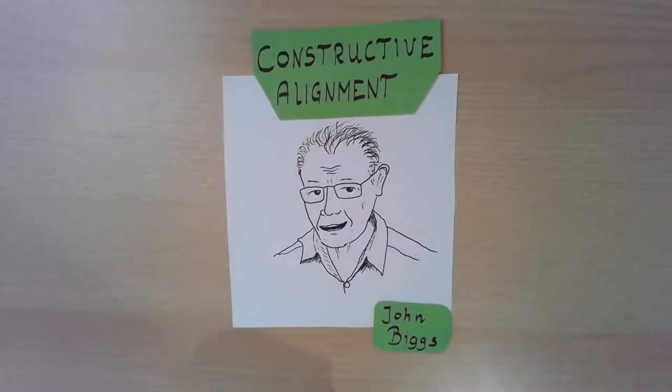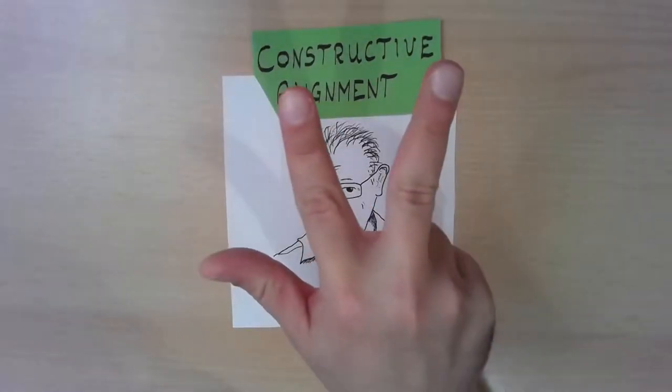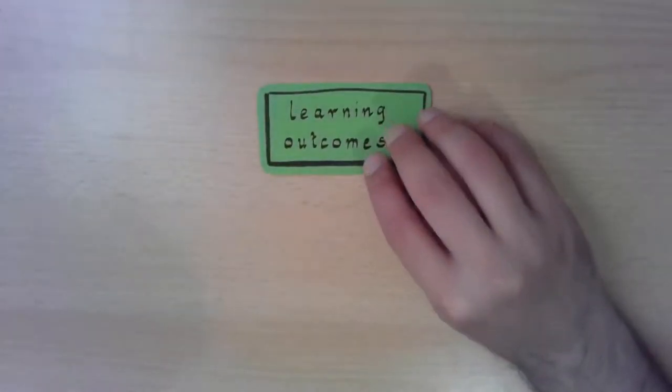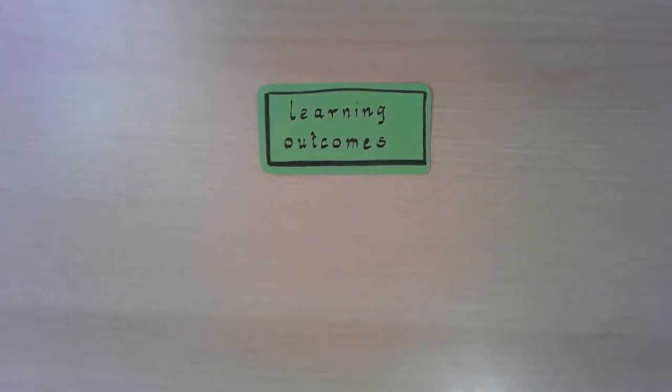Now let's have a look at this model. John Biggs says there are three elements of your course that have to be aligned in a constructive way. So what is the first thing you should think about when planning your course? Of course, it's the definition of learning outcomes. The question is: what should the students be able to do after they have finished the course? Two things are important.